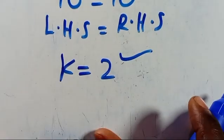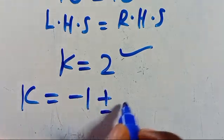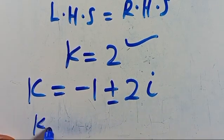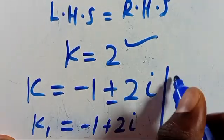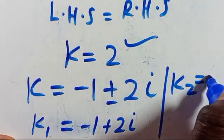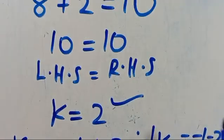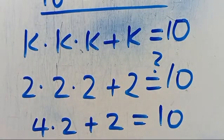Let us also verify when k equals minus 1 positive or negative 2i. We can simplify this further to be k1 equals minus 1 plus 2i, then k2 equals minus 1 minus 2i. You can substitute these into the original equation and verify whether the left-hand side equals the right-hand side — you can complete that. If you are new and find this video interesting, don't forget to share, like, comment, and subscribe to our YouTube channel for more tutorial videos.